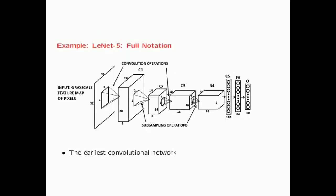One of the first convolutional neural networks, LeNet-5, is not very different from modern neural networks in its basic structure. The main differences are that ReLUs were not used — traditional activation functions were used instead — and it was used for handwriting recognition in bank checks on grayscale images. In the first and third layers, convolution operations are performed.